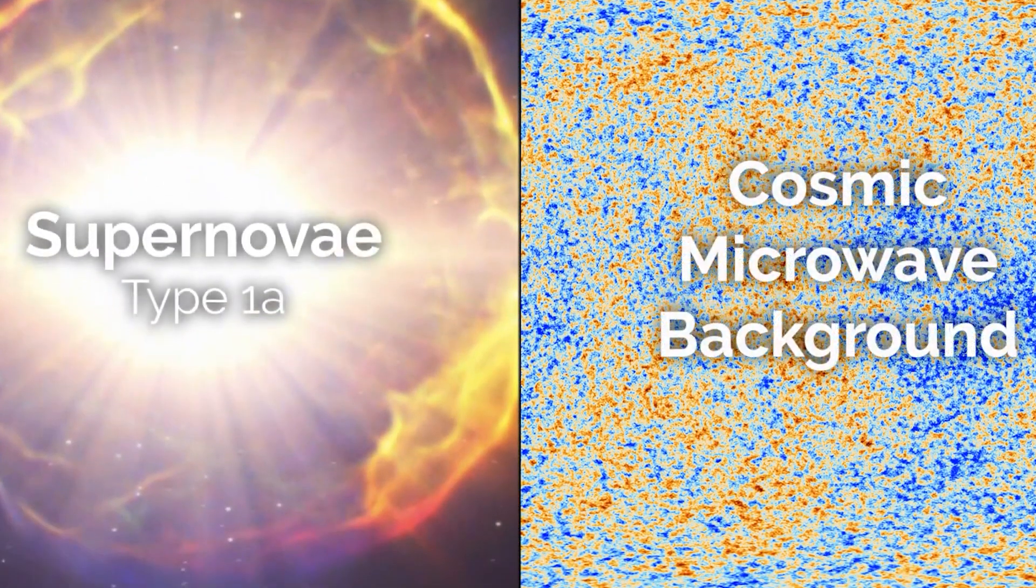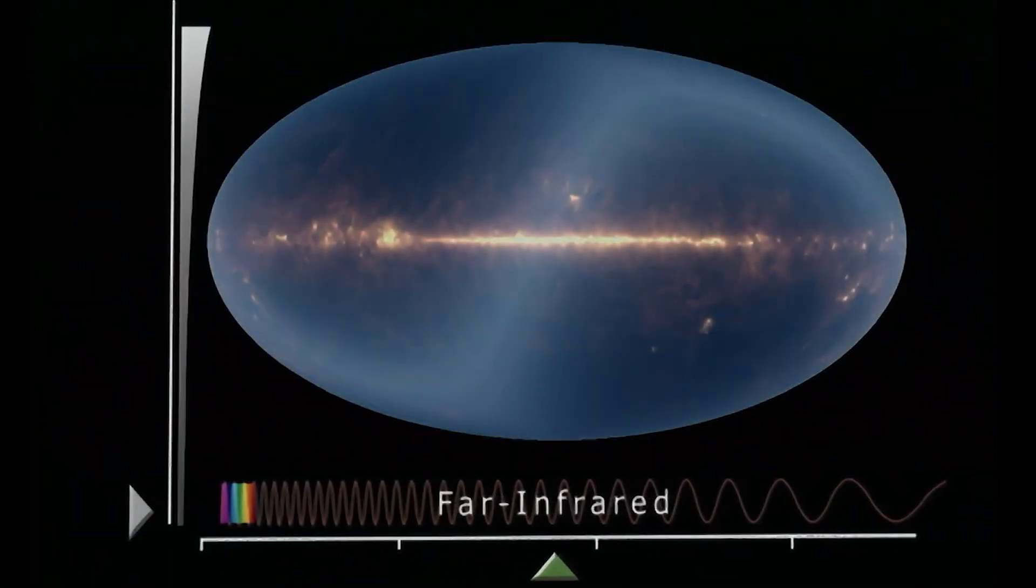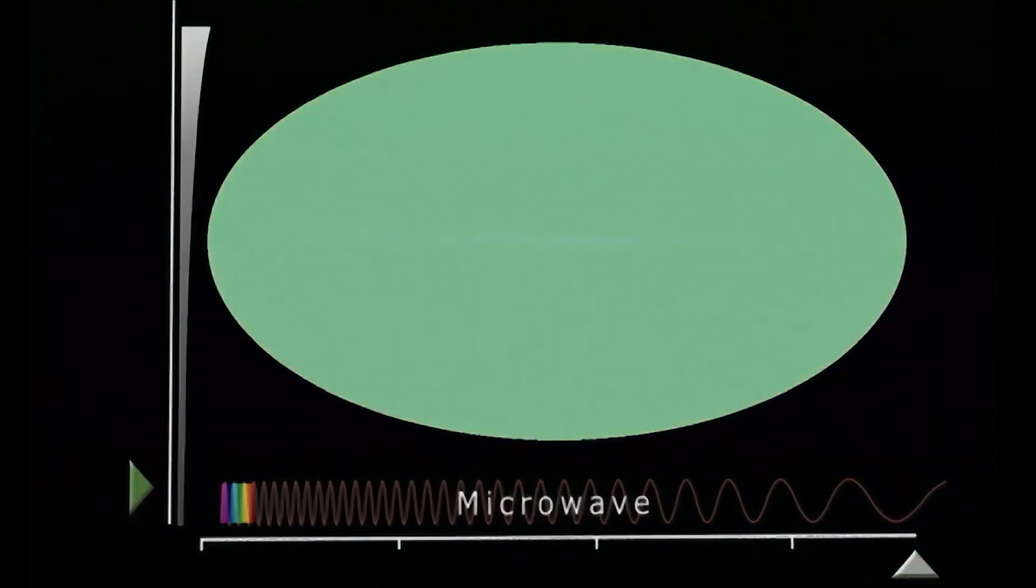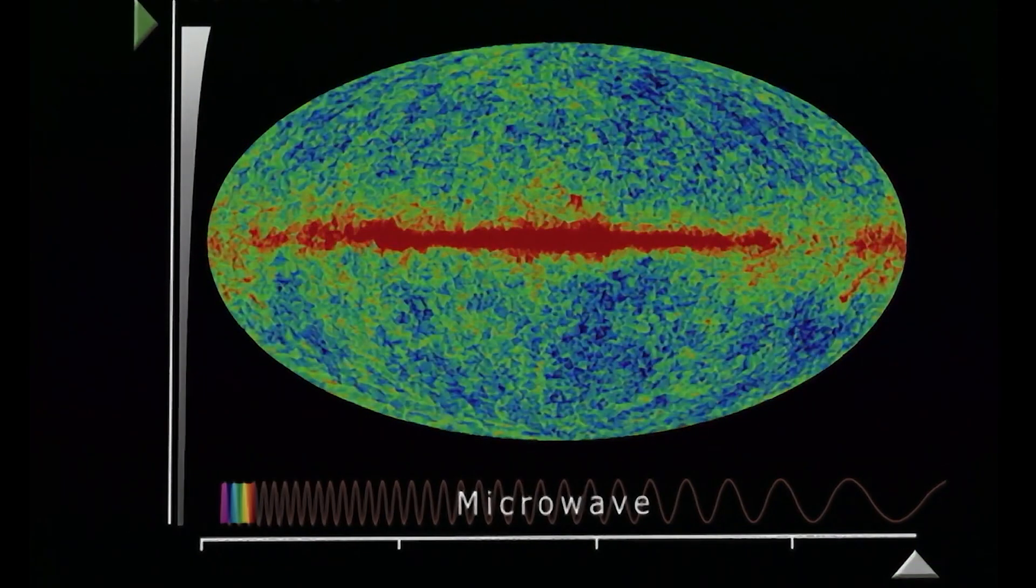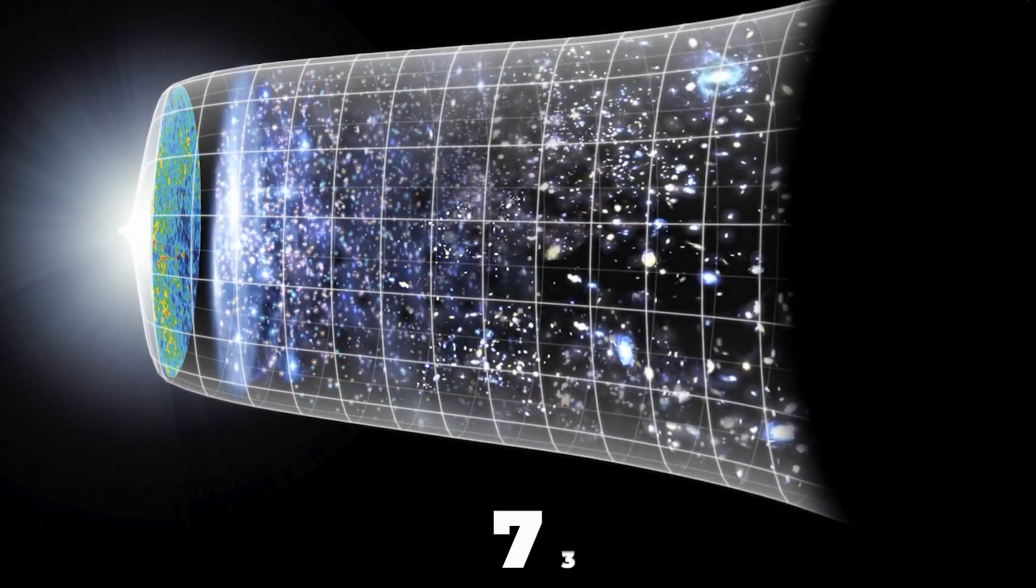The two primary methods for measuring the Hubble constant disagree. The cosmic microwave background suggests a value of about 68 kilometers per second per megaparsec, while nearby galaxies give us a significantly higher value of around 73.